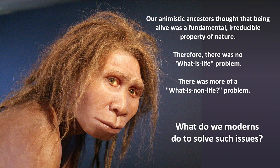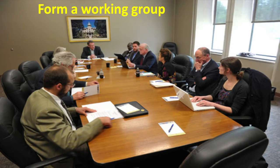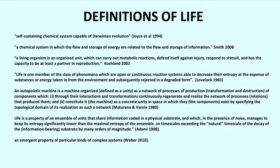What do we moderns do to solve this issue? We form a working group. If you look at the literature, there are many definitions of life. There's one popular one — Joyce, 1994 — NASA likes this one: 'A self-sustaining chemical system capable of Darwinian evolution.' But then you have to define what Darwinian evolution and self-sustaining mean. That's not easy.